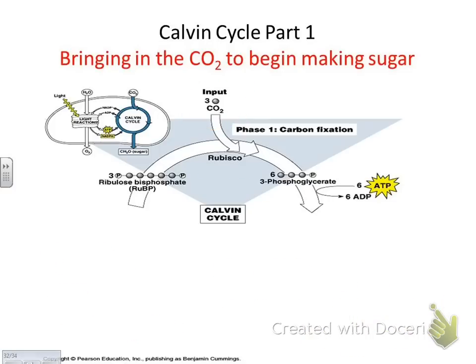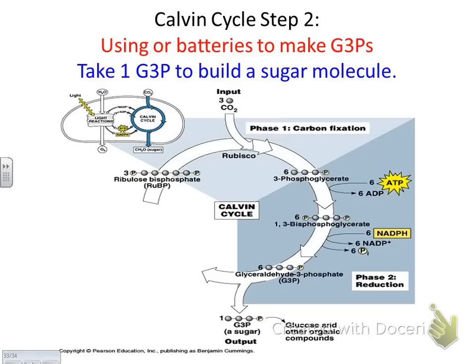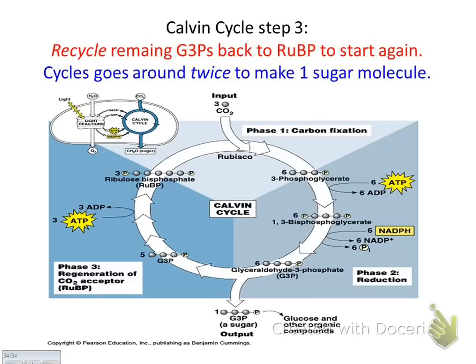The remaining G3Ps will be converted back into RUBP — so the remaining G3Ps are recycled and used for RUBP again. Then repeat steps one through three to make a second G3P. The sugars will then be needed to feed the whole plant or algae, since plants and algae do photosynthesis.